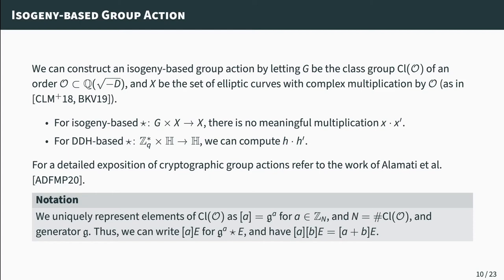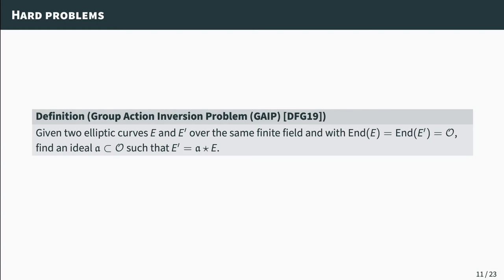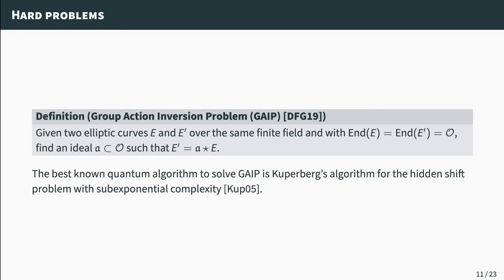Before presenting our isogeny-based adapter signature construction, I want to clarify our notation. Instead of the star notation for group actions, we use bracket notation. Since the class group is a finite group with generator g, we write g^a * e simply as [a]e. Under this notation, [[a]e][b] equals [a+b]e. The security of our adapter signature, along with the underlying hard relation, is based on the group action inversion problem (GAIP): given two elliptic curves e and e', it is hard for an adversary to invert the group action. The best-known classical algorithm requires exponential time, and the best-known quantum algorithm requires sub-exponential time — Kuperberg's algorithm for the hidden shift problem.